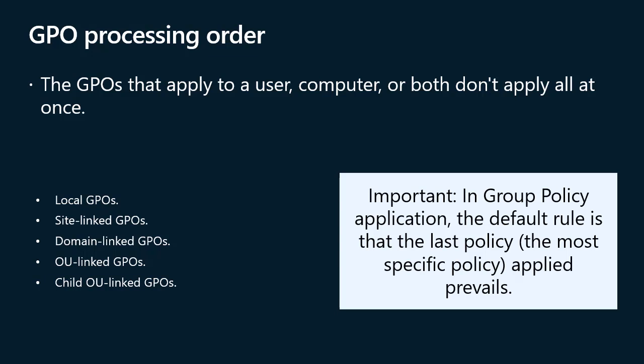In group policy application, the default rule is that the last policy — the most specific policy applied — prevails. For example, a policy that restricts access to the control panel applied at the domain level could be reversed by a policy applied at the OU level. If you link several GPOs to an OU, their processing occurs in the order the administrator specifies on the OU's linked Group Policy Objects tab in the Group Policy Management Console. By default, processing is enabled for all GPO links. You can disable a container's GPO link to block the application of a GPO completely for a given domain or OU.